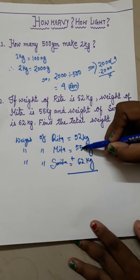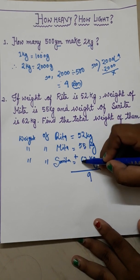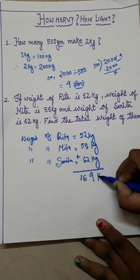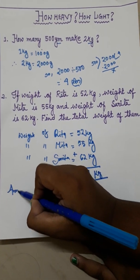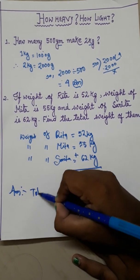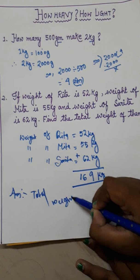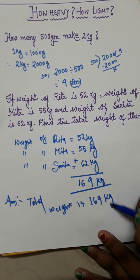So 2 plus 5 is 7, plus 2 is 9, and here 5 plus 5 is 10, plus 6 is 16. So here our answer will be 169 kg. Here by writing answer we will write total weight is 169 kg.